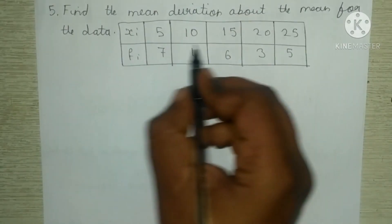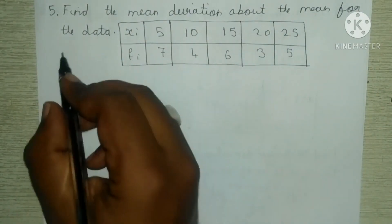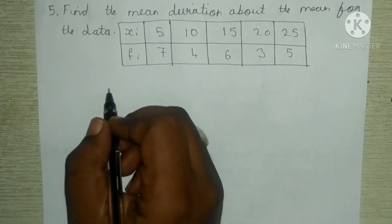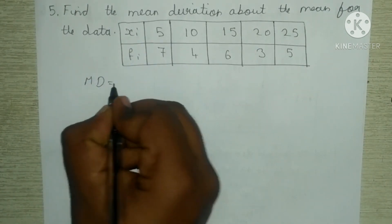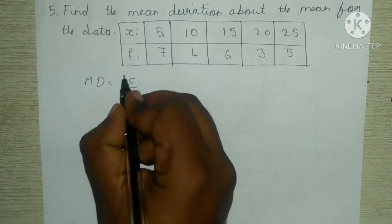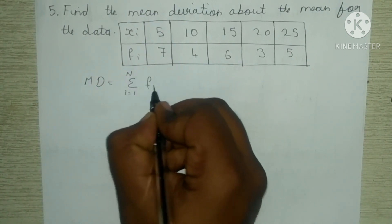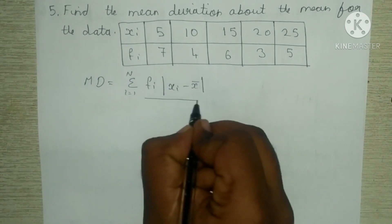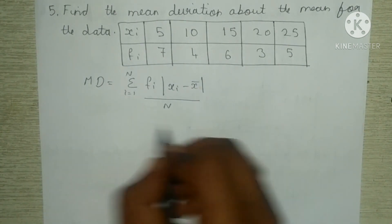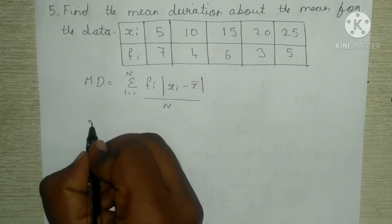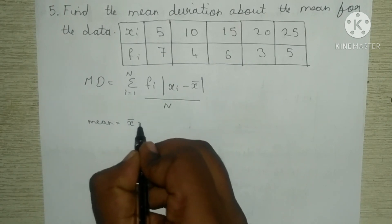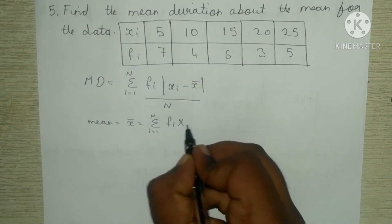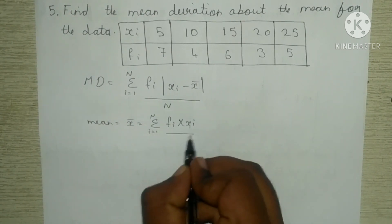Next, the fifth question: find the mean deviation about the mean for the data where x and f are given. To find the mean deviation, the formula is: MD = summation from i = 1 to n of f_i × |x_i minus x-bar|, all divided by N. The mean formula is x-bar = summation from i = 1 to n of f_i × x_i, all divided by N.